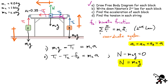For the third block, my coordinate system says up is positive. So I have T2 minus M3g equals M3 times A. They all have the same acceleration. This is what Newton's second law looks like for each block.